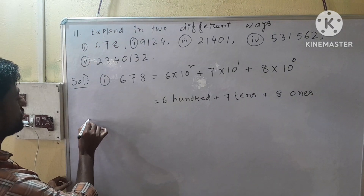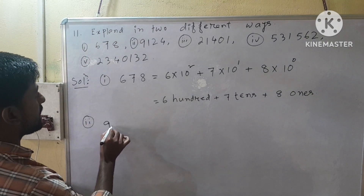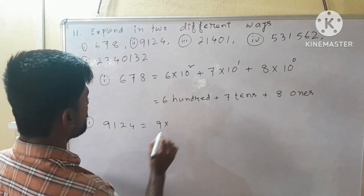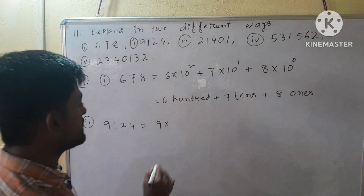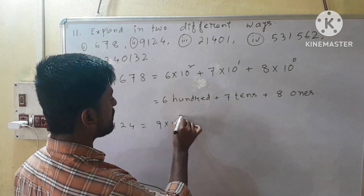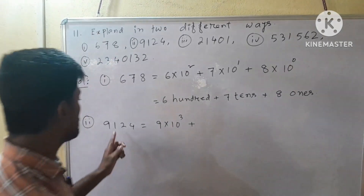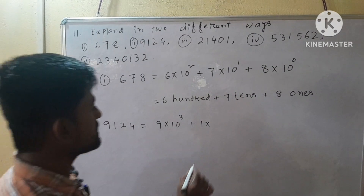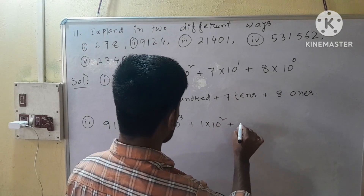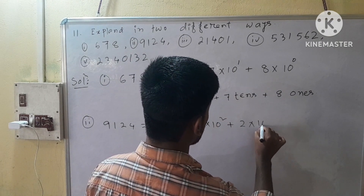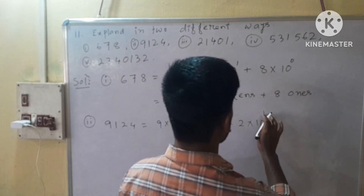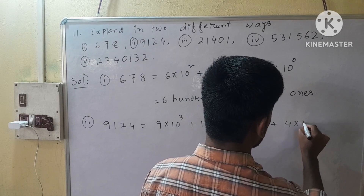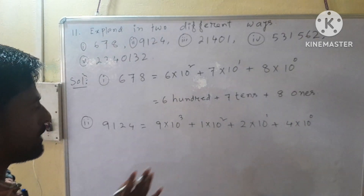Number 2: we have 9, 1, 2, 4. So 9 into 10 to the power 3, plus 1 into 10 to the power 2 (after 1 we see 2 digits), plus 2 into 10 to the power 1 (after 2 we have 1 digit), plus 4 into 10 to the power 0. That is one way.